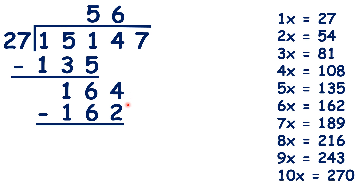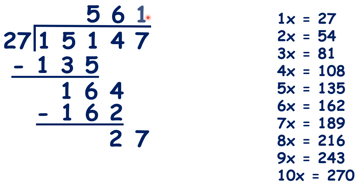164 minus 162 is 2, and we can bring down the 7, so we have 27 divided by 27, which is 1, and we have nothing left to divide, so we have our answer.